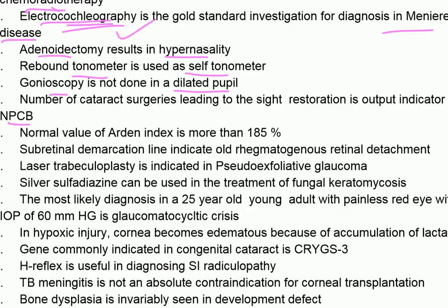The number of cataract surgeries leading to sight restoration is an output indicator for NPCB — the National Programme for Control of Blindness. Normal value of Arden index is 185%, used for interpretation of electro-oculogram (EOG).